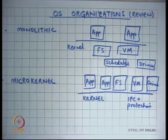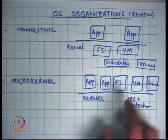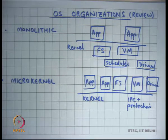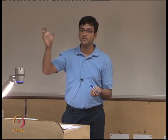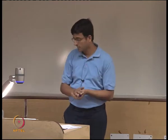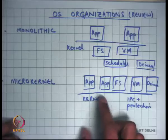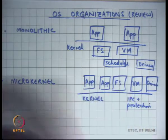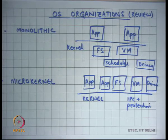There was an alternate organization called the microkernel, where these different components are moved into separate protection domains. They are run as separate servers — either in unprivileged mode or in privileged mode. In either case, they are isolated from each other. The kernel is basically just inter-process communication, IPC, and protection — so nobody can run away with resources, and the kernel's job is to provide fast inter-process communication.